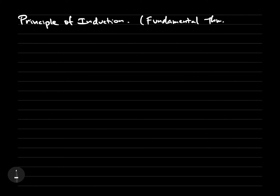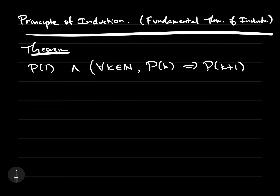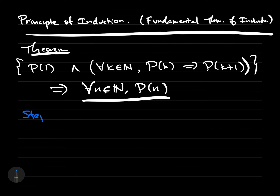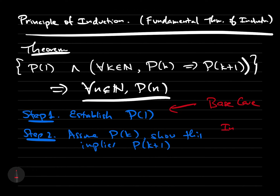Let us state the principle of induction as the following theorem, which can be written in a very compact manner. If we know that p(1) is true, and whenever p is true for a particular k it is also true for k+1, this gives us that p(n) is true for any n in the natural numbers. An induction proof has two steps: the base case, which establishes that p(1) is true, and the induction step, where we assume p(k) is true and show it implies p(k+1) is true. In different contexts we might prove the induction step directly, by contradiction, or by the contrapositive — whatever is most convenient.